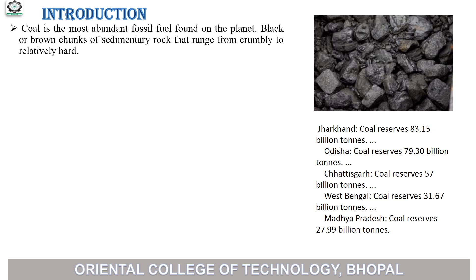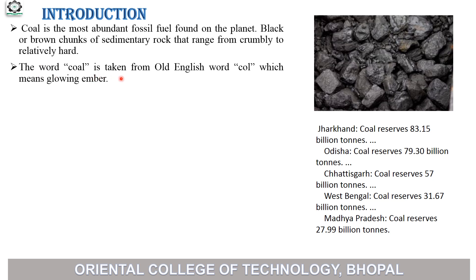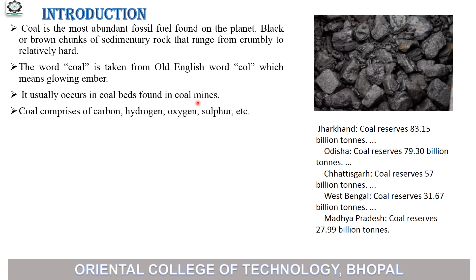Introduction. Coal is the most abundant fossil fuel found on planet Earth. It consists of brown or black chunks of sedimentary rock that range from crumbly to relatively hard. The word coal is taken from the Old English word 'col', which means glowing ember. It usually occurs in coal beds found in coal mines. Coal comprises carbon, hydrogen, oxygen, sulphur, etc.